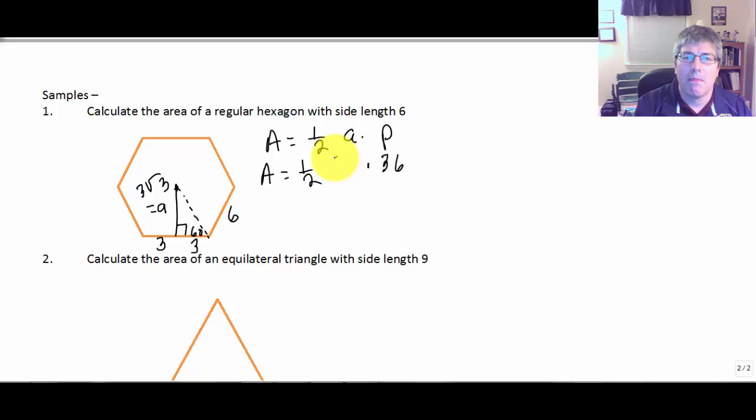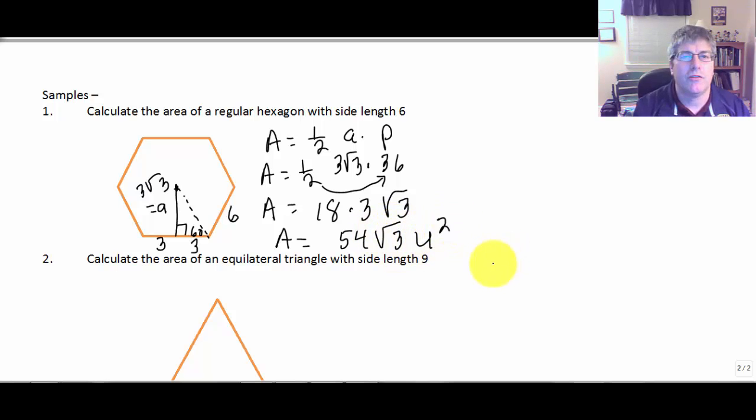So, A is 3 radical 3. So, 1/2 times 3 radical 3 times 36. I'm going to take half of 36. And we get 18 times 3 square root of 3. And so, the area is 54 times the square root of 3 units squared.